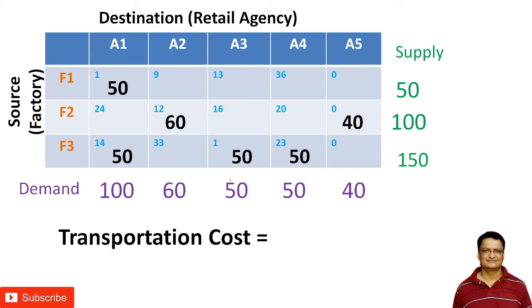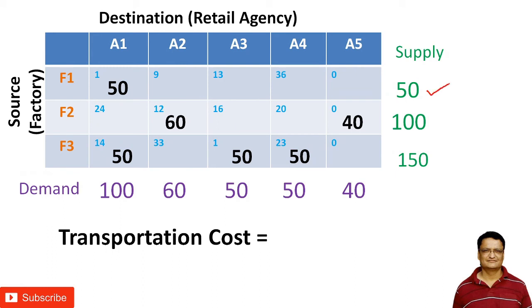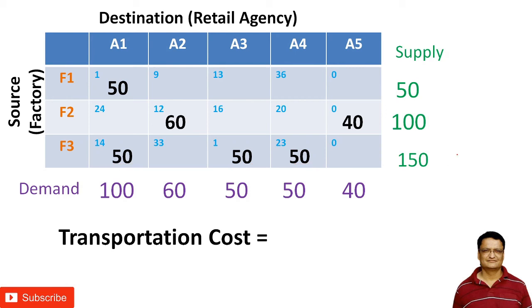Let us check the row and column constraints. For row constraints, the allocation of 50 satisfies the supply of 50 for F1. For F2, 60 plus 40 gives 100, satisfying that row constraint. For F3, 50 plus 50 plus 50 plus 50 gives 150, satisfying that constraint. For columns: 50 plus 50 equals 100; 60 equals 60; 50 equals 50; 50 equals 50; and 40 equals 40. All row and column constraints are satisfied.